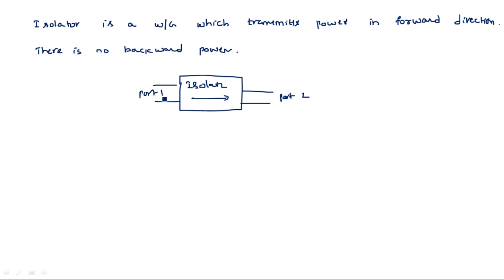I am discussing the operation of the isolator again because in order to simplify the parameters like S12 and S21, you should know the working principle of this isolator. Without knowing the working principle of any device you cannot calculate the scattering matrix parameters, because the calculation of these parameters involves consideration of two types of properties: the properties of the scattering matrix and the properties of that particular waveguide, whether it is an isolator or whatever it is.